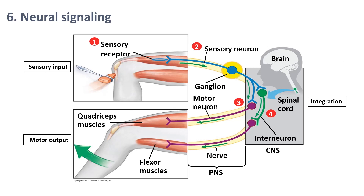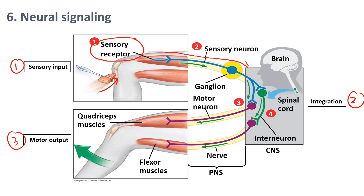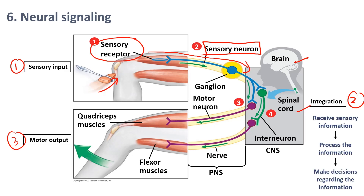Information processing by the nervous system occurs in three stages: sensory input, integration, and motor output. Sensory input comes from many sensory receptors that monitor changes occurring both inside and outside the body. For example, striking the patellar tendon with a reflex hammer activates the sensory receptor and sends a signal to the CNS through sensory neurons. Another example: when you feel pain after touching a hot object, a pain receptor picks up that information and sends it to the CNS. Integration takes place in the CNS — the brain and spinal cord — which receives, processes, and makes decisions about sensory information.